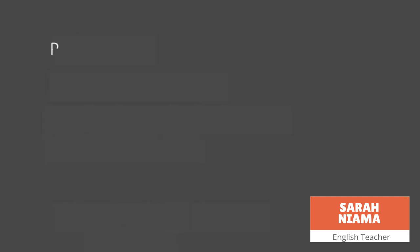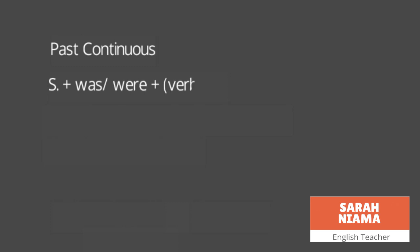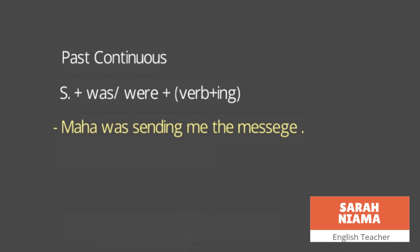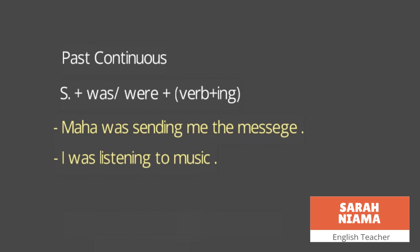The rule of the past continuous tense is: subject plus 'was' or 'were' plus verb plus 'ing'. Example: 'Maha was sending me the message' — 'Maha' is the singular subject, 'was' is used for singular, 'sending' is 'send' plus 'ing', 'me the message' is the complement. Another example: 'I was listening to music' — 'I' is the subject, 'was' is used, 'listening' is 'listen' plus 'ing', 'to music' is the complement.